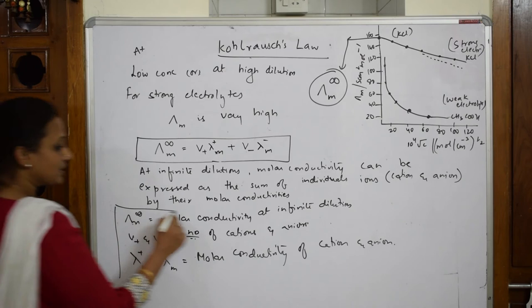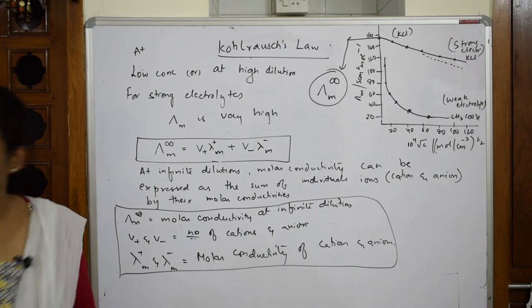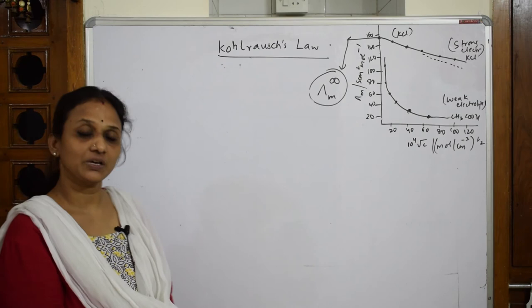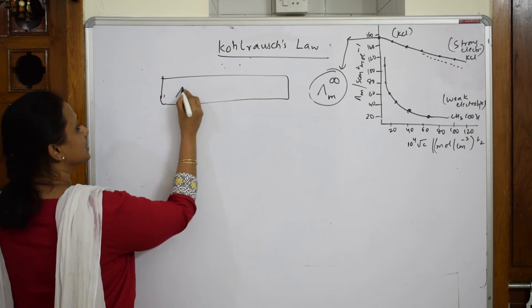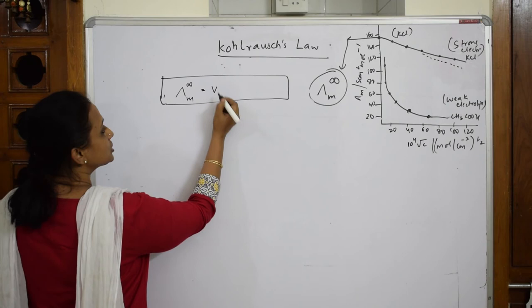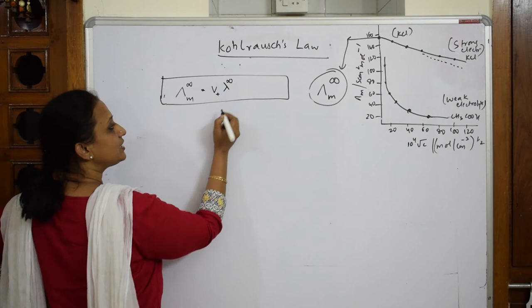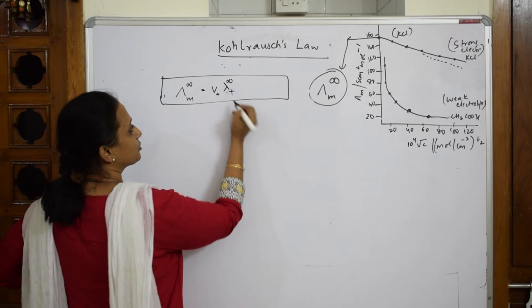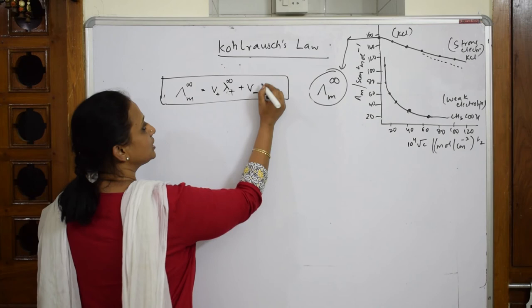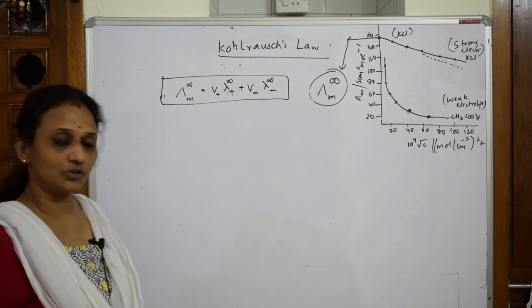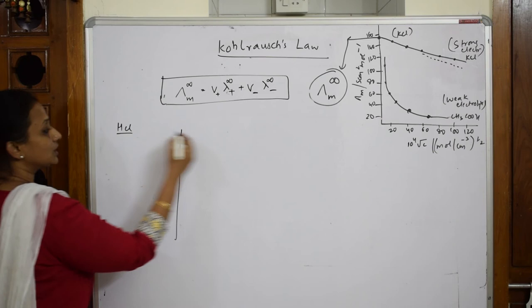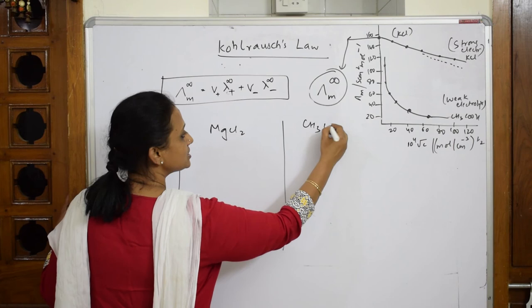Now let us come back and take some examples to understand Kohlrausch's Law. You can also write it as: λm∞ equals ν⁺ times λm⁺∞ plus ν⁻ times λm⁻∞, where ν is the charge number of the ion. Suppose I take the examples of HCl, magnesium chloride MgCl₂, and acetic acid CH₃COOH.